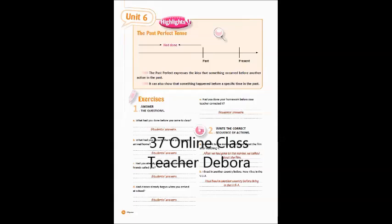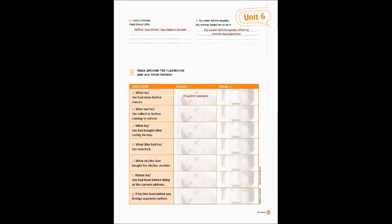Exercise to write the correct sequence of actions. A: We went to the movies, we talked about the film after watching it. After we had gone to the movies we talked about the film. B: I lived in another country before, now I live in the USA. I have lived in another country before living in the USA. C: I took a shower, I had dinner after. Before I had dinner I had taken a shower. D: My sister did the laundry, my mother asked her to do it. My sister did the laundry after my mother had asked her.